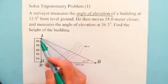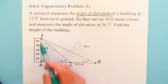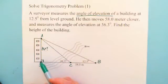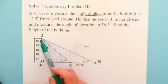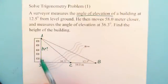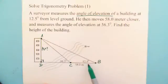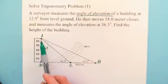We can see that AD is the same side. And also AD is the opposite side with angle 12.5 degrees in right triangle ABD, and also H is the opposite side with angle 36.3 degrees in right triangle ACD.